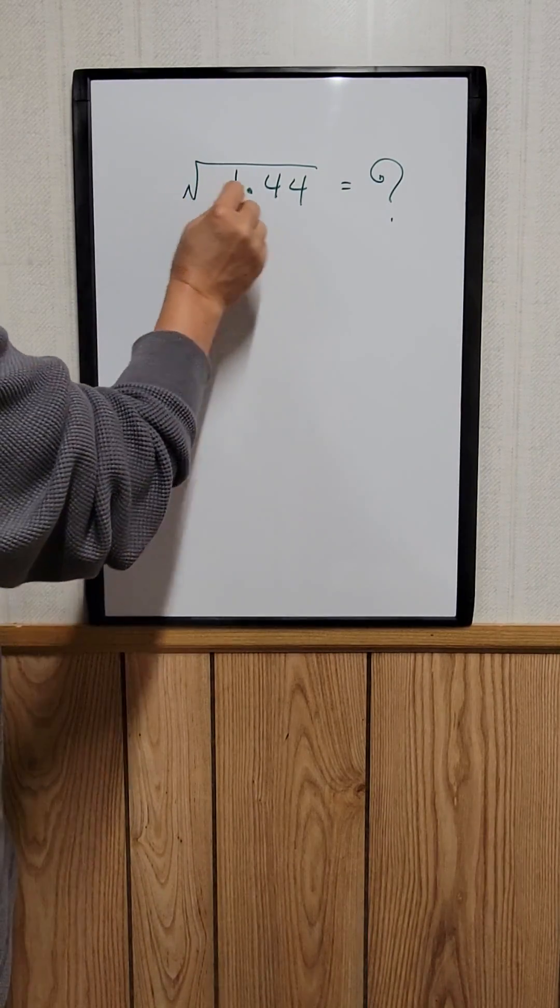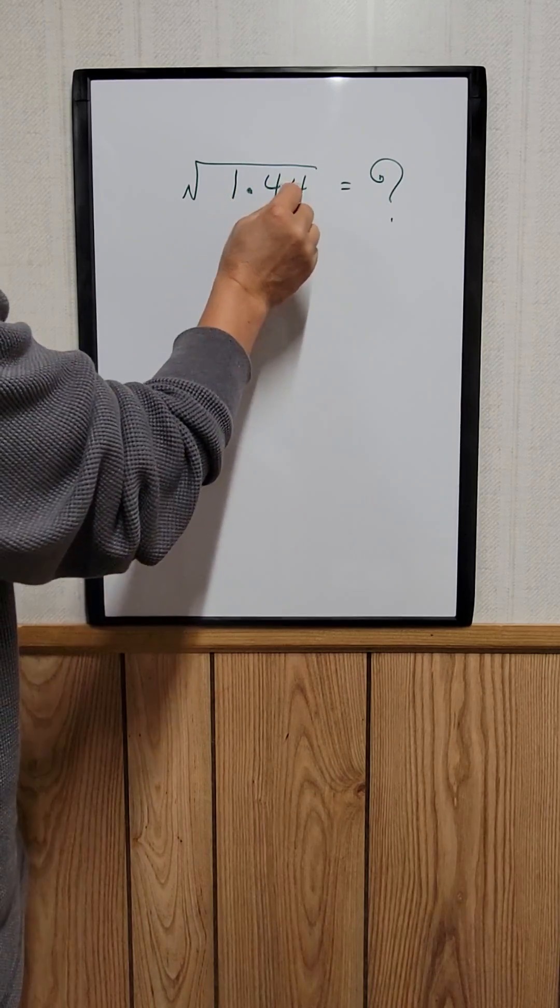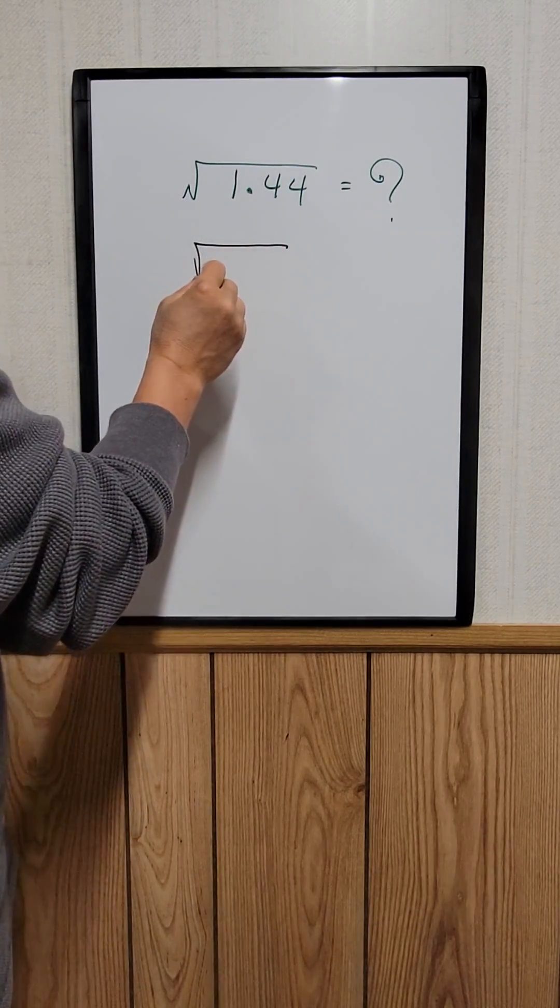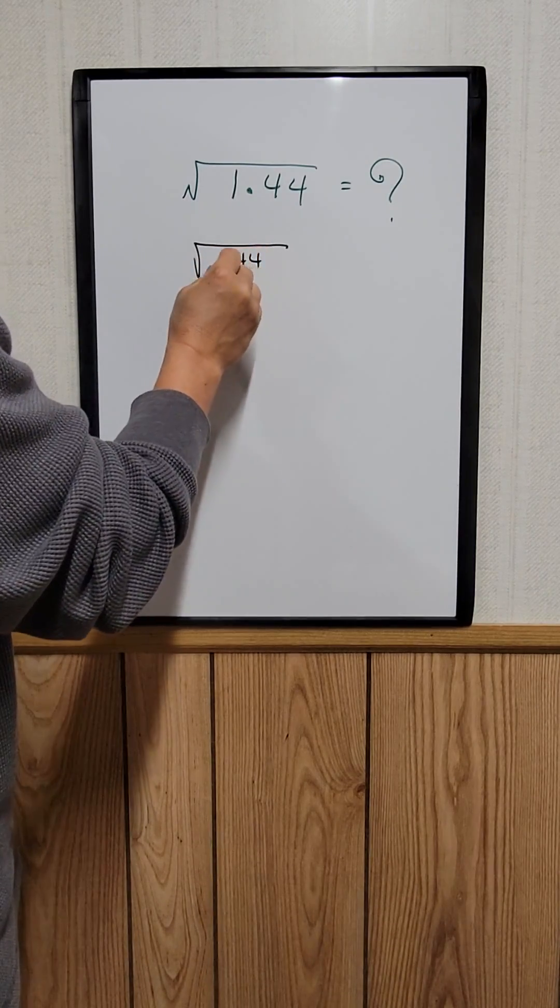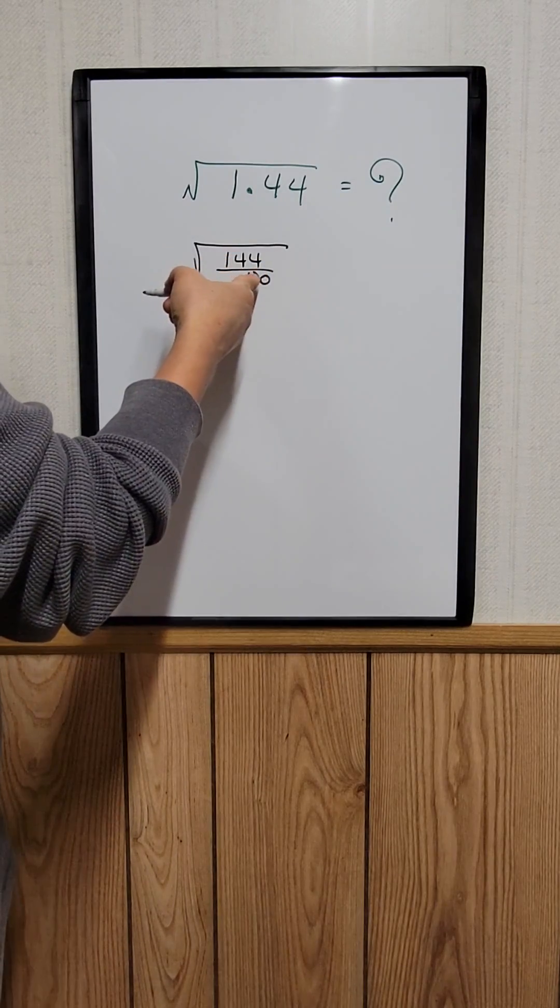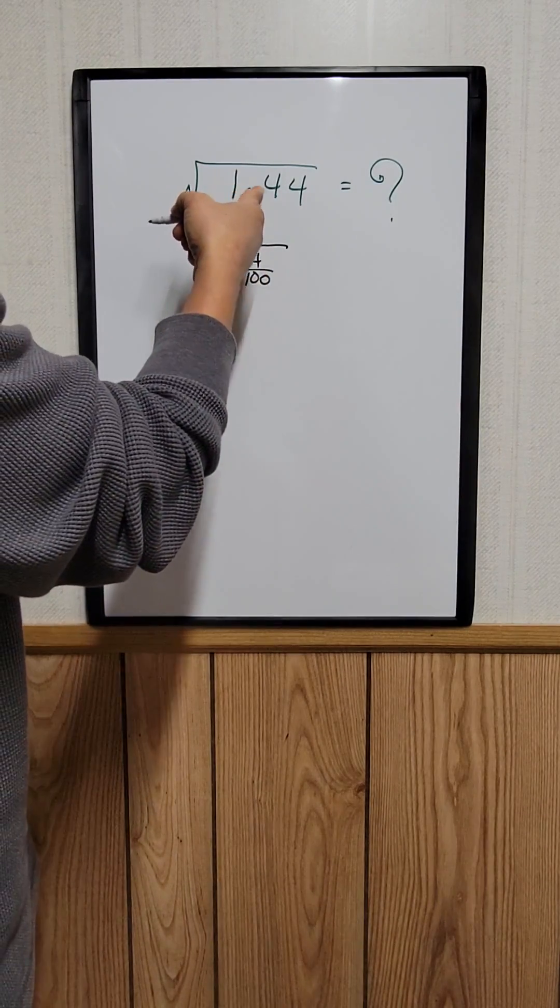First, you need to convert 1.44 into a fraction. It would be the square root of 144 divided by 100. If you take 144 divided by 100, it equals 1.44.